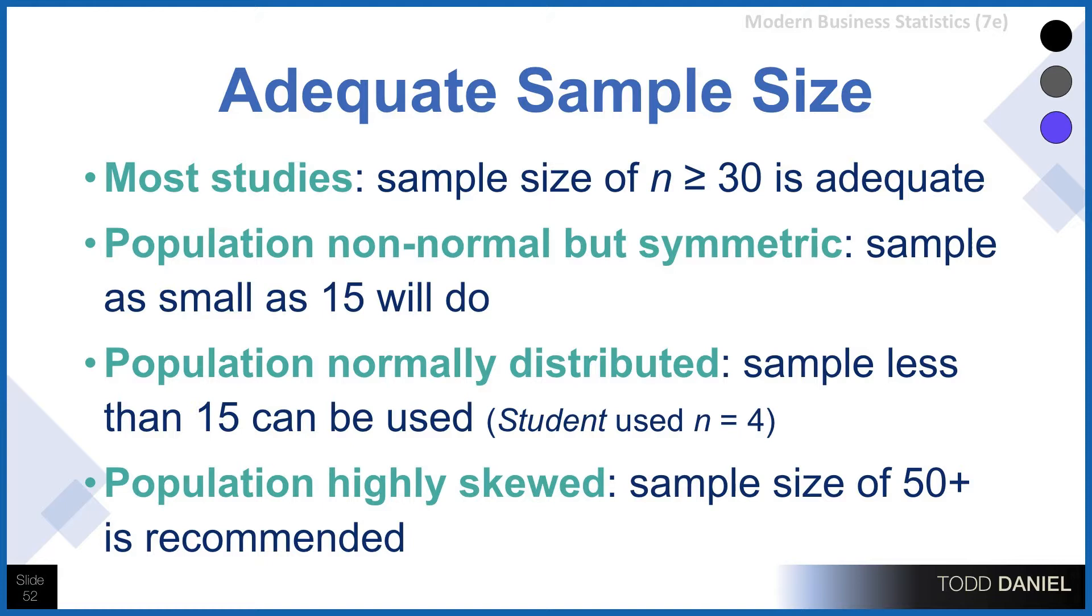But if the population is highly skewed, positively or negatively skewed, if it has extreme outliers in it, then you're going to need sample sizes of 50 or more in order to get good estimators.